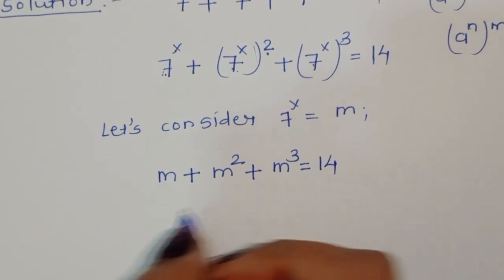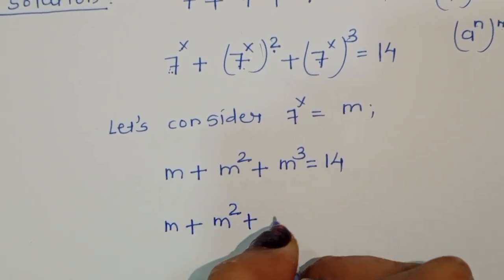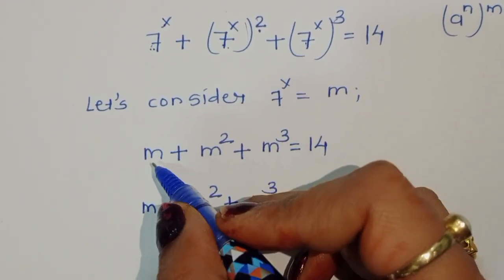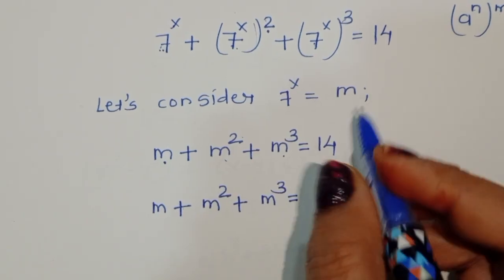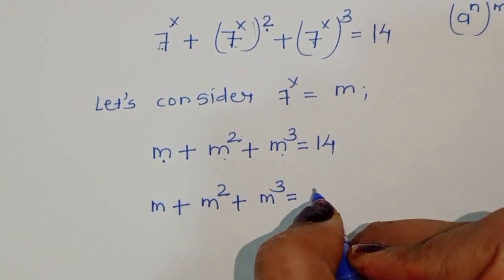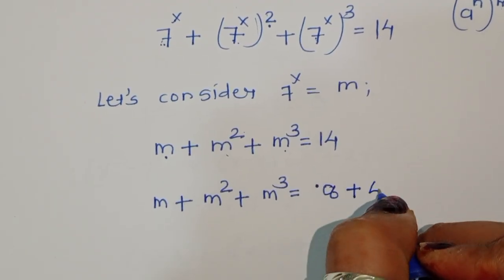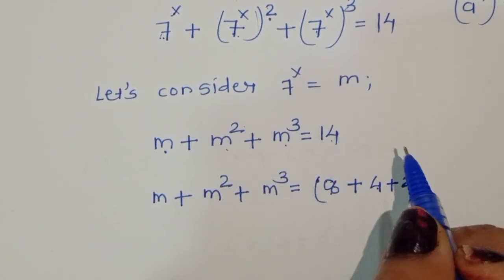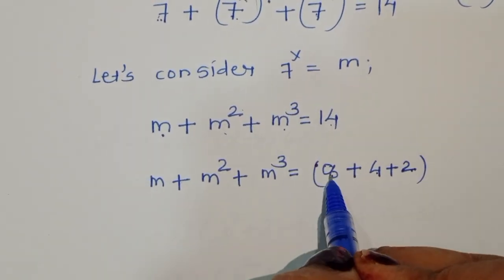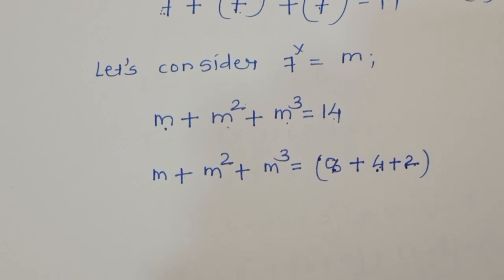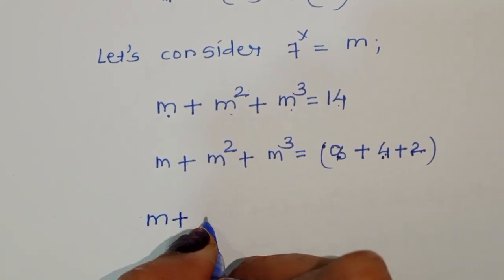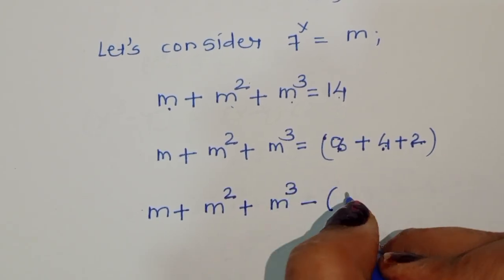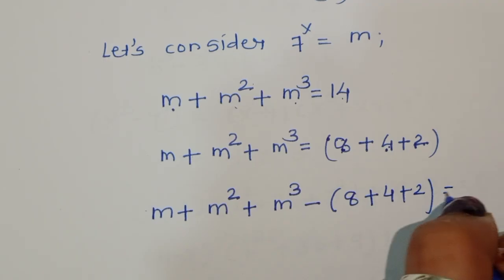Now m + m² + m³ = 14. We need to write 14 as a combination of a number, its square, and its cube. We can write 14 as 2 + 4 + 8, since 8 is the cube form, 4 is the square form, and 2 is the real number. So rearranging: m + m² + m³ − (8 + 4 + 2) = 0.